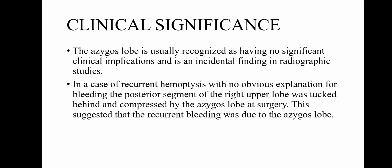In a case report of a patient with recurrent haemoptysis with no obvious explanation for bleeding, the posterior segment of the right upper lobe was found to be tucked behind and compressed by the azygous lobe at surgery. This suggested that the recurrent bleeding was due to the azygous lobe. However, further clarification is needed. Usually, the azygous lobe is not recognized as having significant clinical implications.